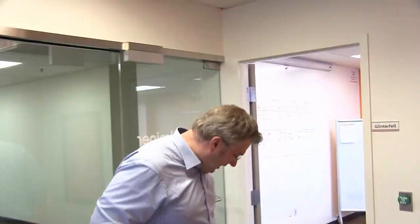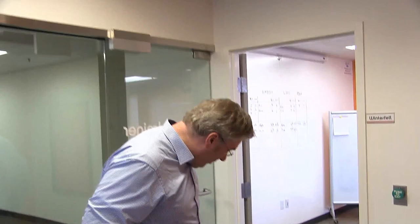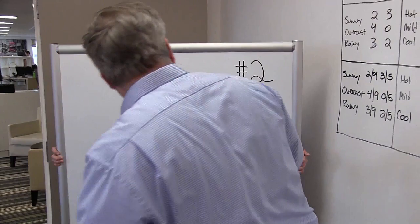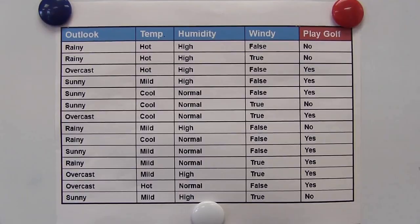We're talking about Naive Bayes now, which is a really good learning scheme — a machine learning scheme — in theory, actually one of the best. So whiteboard number two, please help, Ingo. This is a very famous data set. It's called the weather data or golf data.